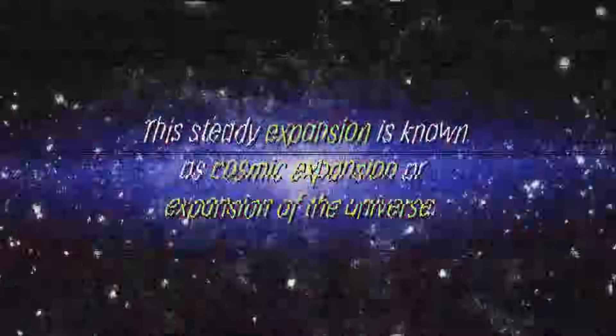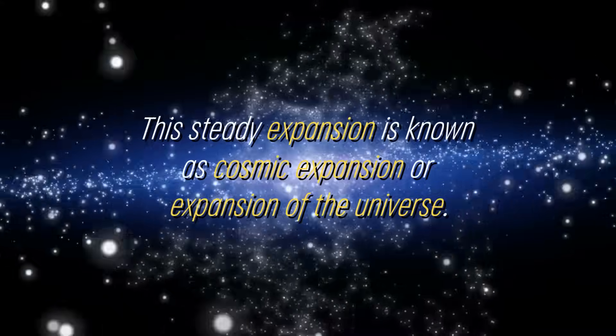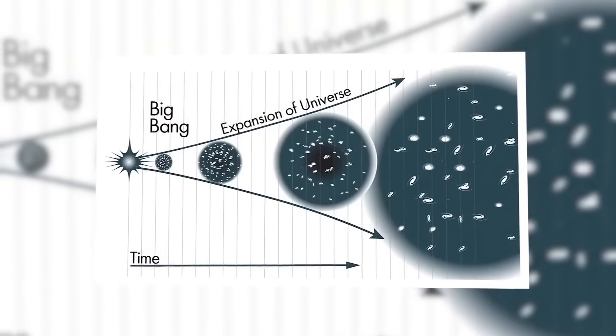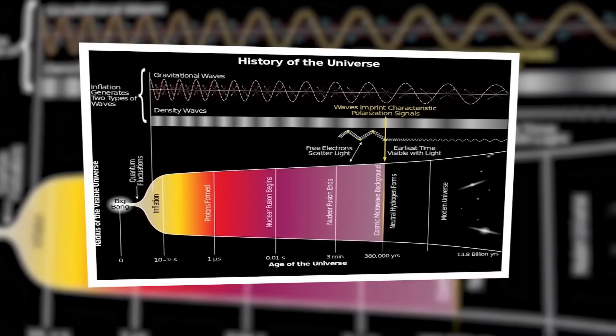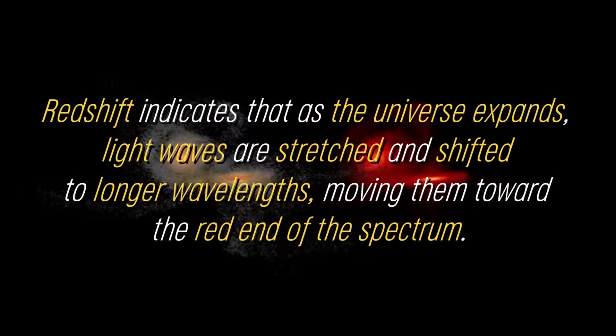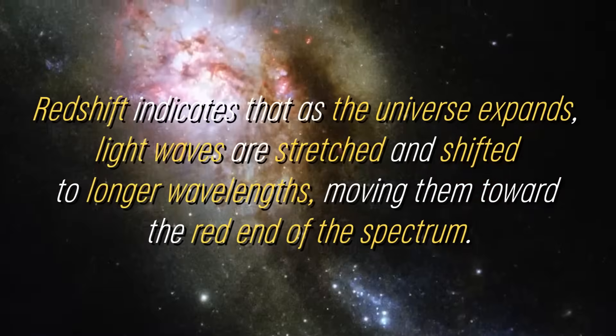As the universe continued to expand, the rate of expansion gradually slowed. It is important to note that although there was rapid cosmic inflation in the initial period, the universe continued to expand at a measurable rate. This steady expansion is known as cosmic expansion, or expansion of the universe. Scientists have observed the effects of this expansion through various observations, such as the redshift of light from distant galaxies. Redshift indicates that as the universe expands, light waves are stretched and shifted to longer wavelengths, moving them toward the red end of the spectrum.